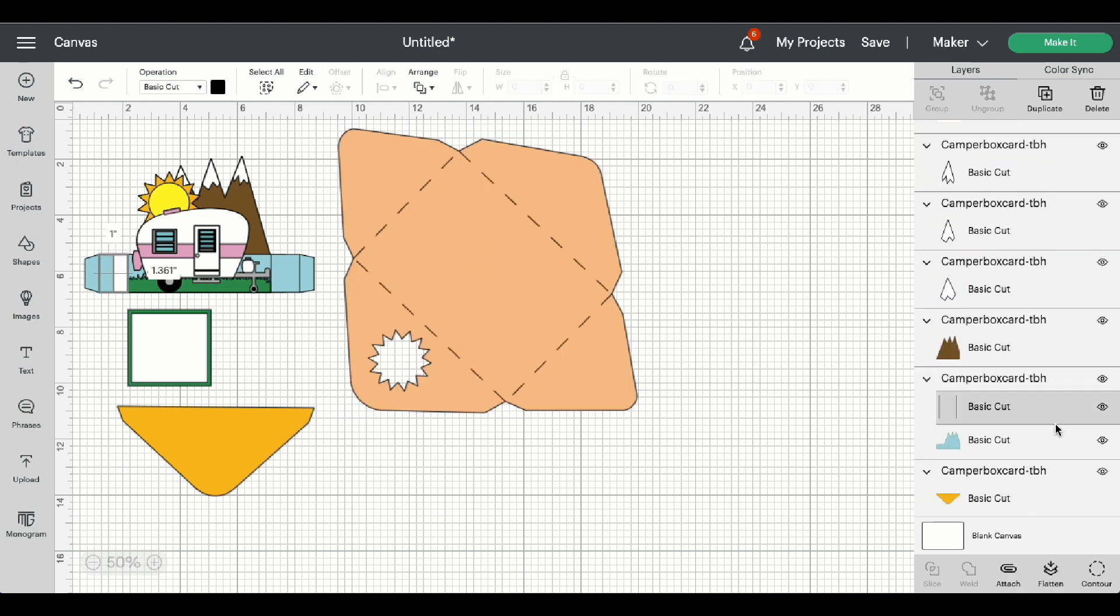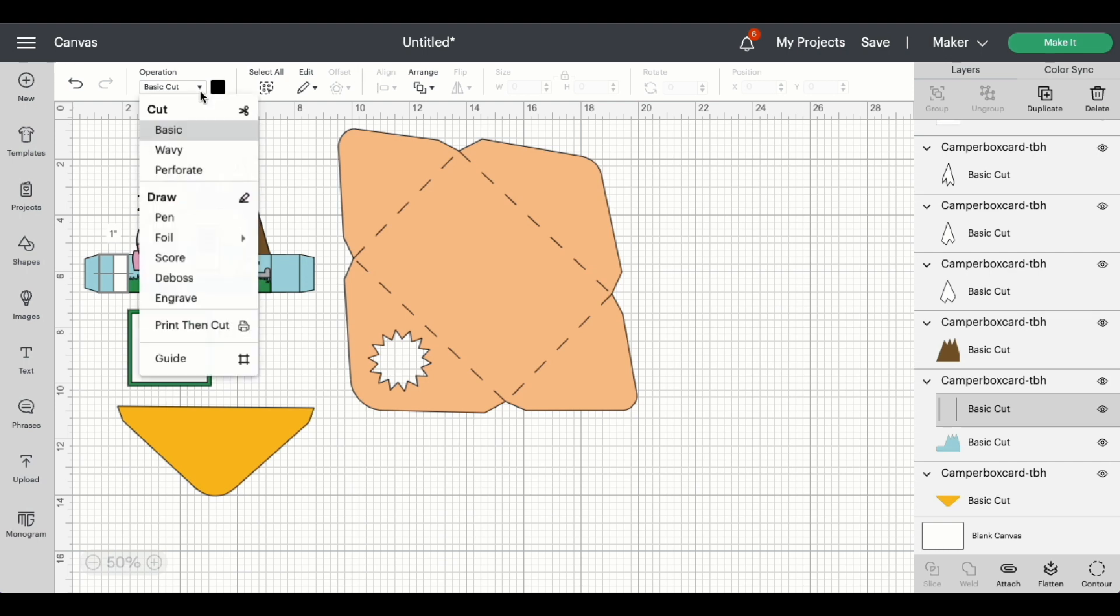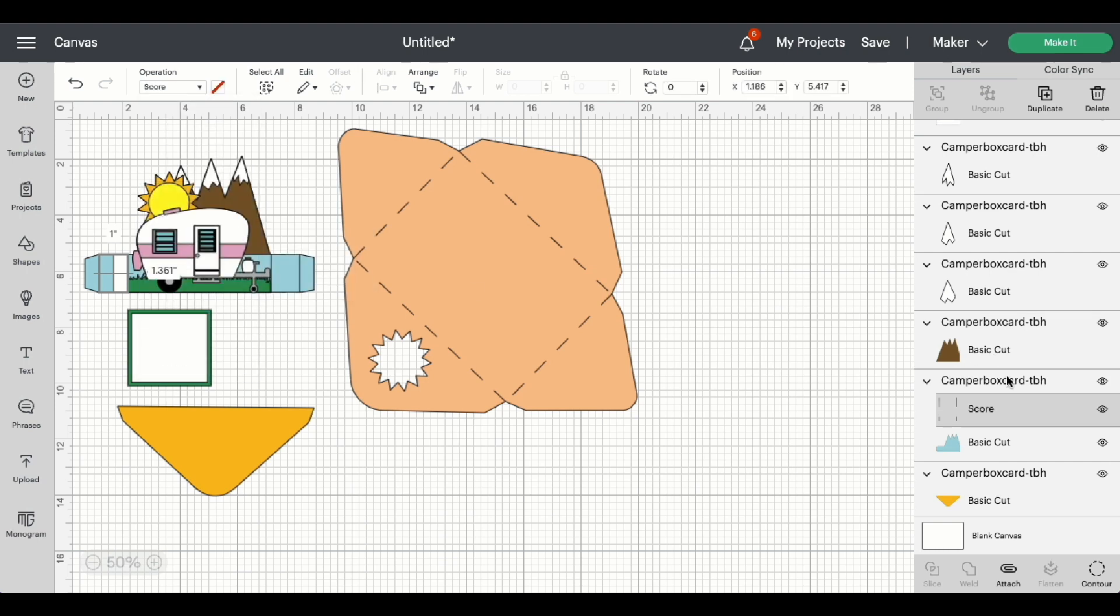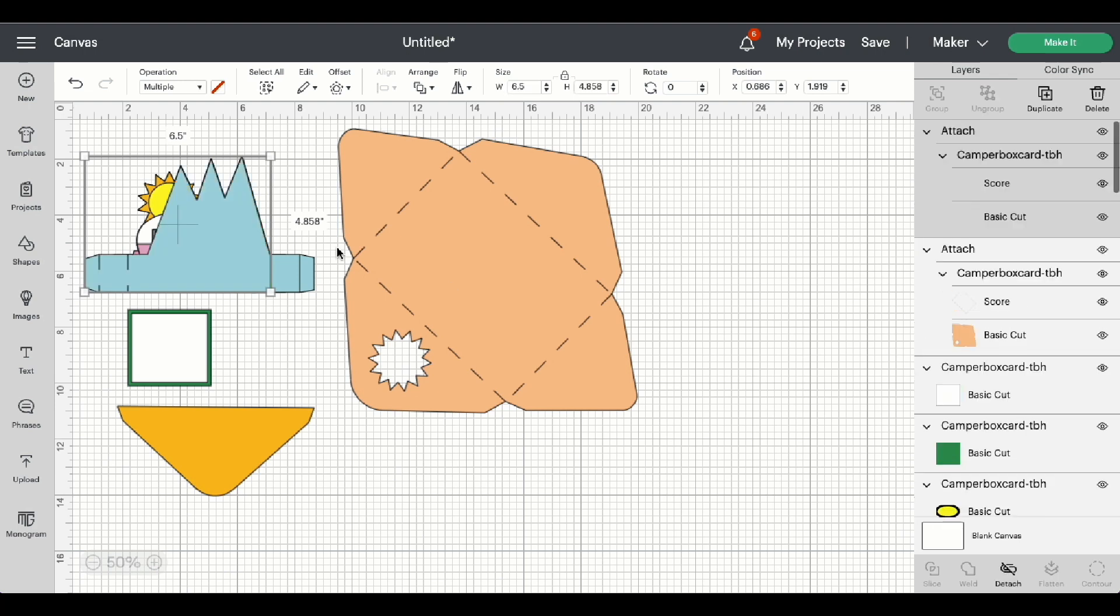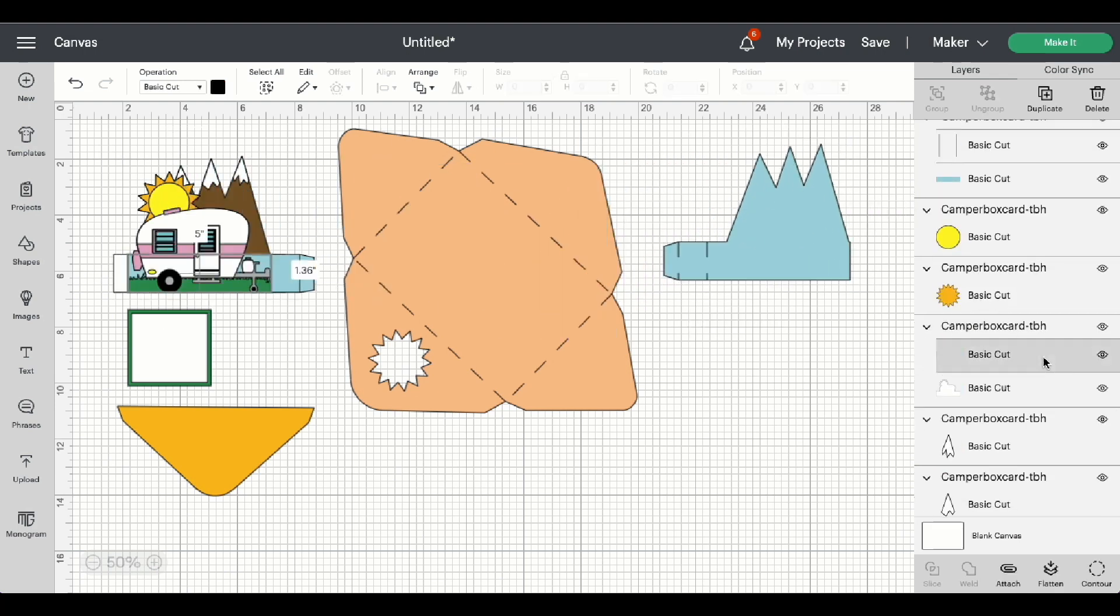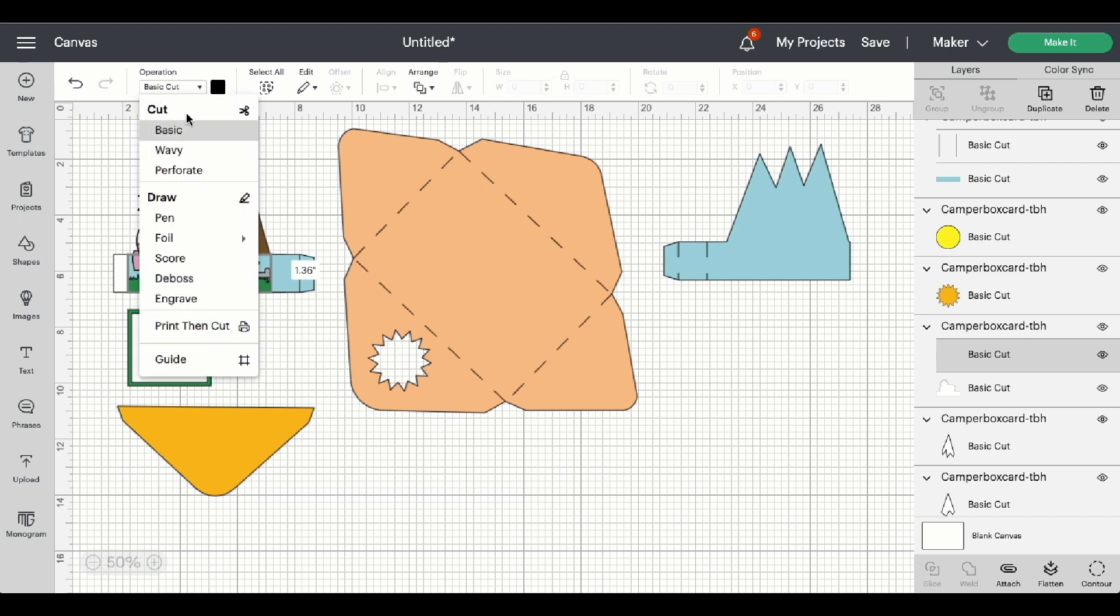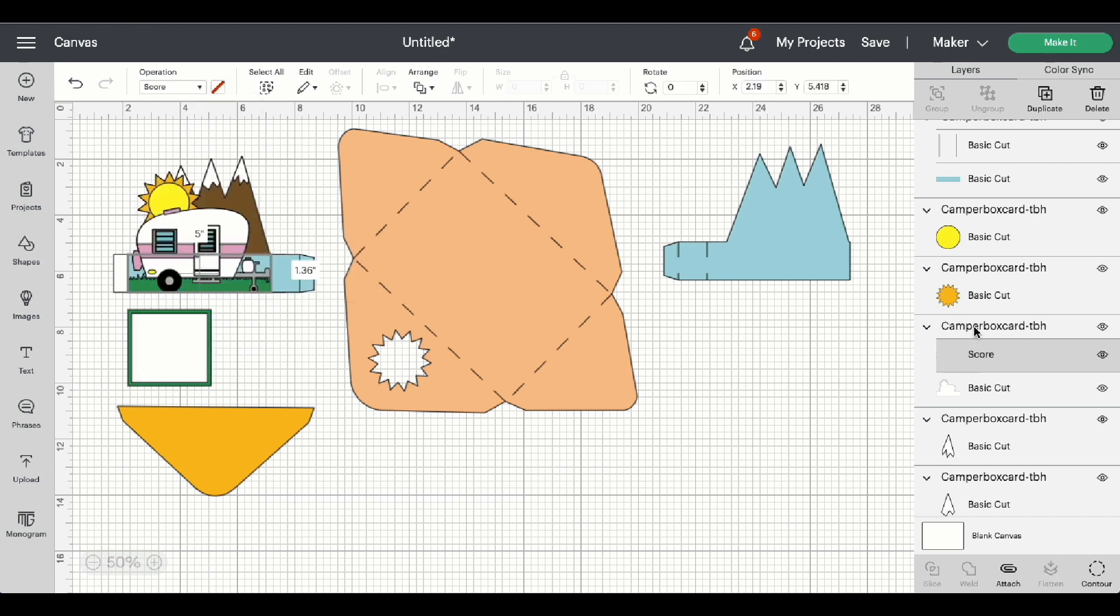Now we need to change the pieces for the box. So highlight the scoreline, change that to score. Highlight the group, and attach. We have two more pieces. Highlight the scoreline, change that to score. Highlight the group, and attach.